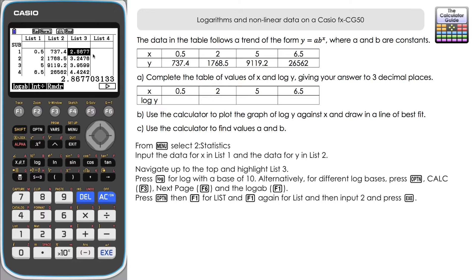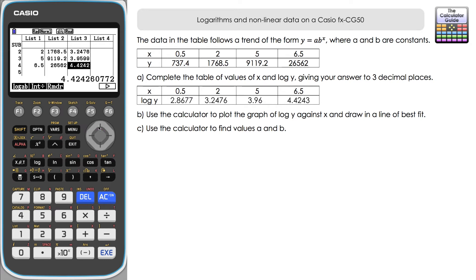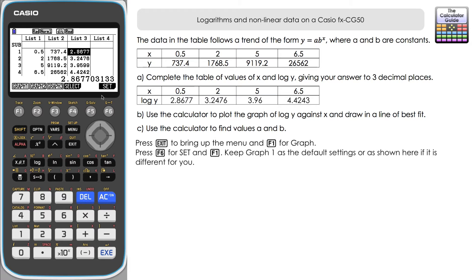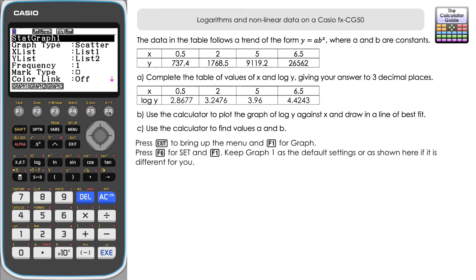You can see the calculator has populated list three with the values for log Y, which we can copy into our table to complete it. Moving on to part B, we need to go to the menu and press F1 for graph. I reset the calculator before this, so all three graphs are in default settings. Press F6 to go to Set.